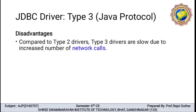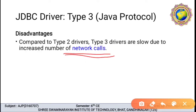What are the disadvantages? In comparison with the type 2 driver, type 3 driver is very slow due to the increased number of network calls. In comparison with type 1, type 3 driver is fast. It is small and fast to load, but in comparison with type 2 driver it is slow due to the increased number of network calls. The communication becomes slow.